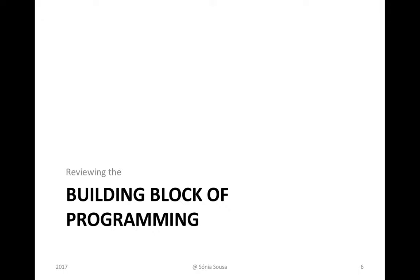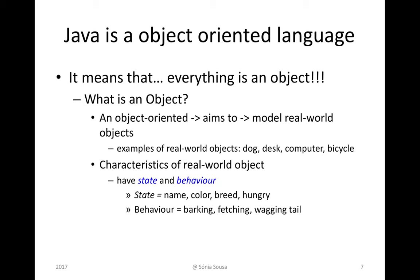Let's address the building blocks of programming. Java is, as I mentioned, an object-oriented language. What does that mean exactly? Basically, everything in Java is represented as an object. An object is mainly a representation of things in the real world.